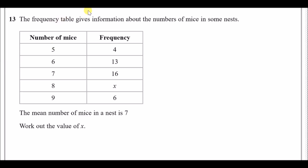The frequency table gives information about the numbers of mice in some nests. On the left hand side we've got the number of mice, and frequency is basically how many times these mice occurs. For the first column, the number of mice is five and this occurs four times, so collectively that's five times four — 20 mice altogether in the first column.